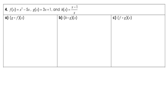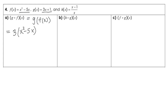Question 4, we are looking at composite functions. For part a, they have us find g of f of x. I'm going to take function f and substitute that into function g. Function g is 3x plus 1, so 3 times — but instead of x I need to use function f — and then we have our plus 1 still. With the distributive property we have 3x squared minus 15x plus 1. The domain here — we have a polynomial — so it is all real numbers.